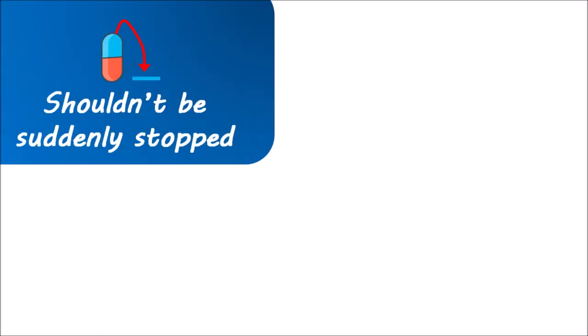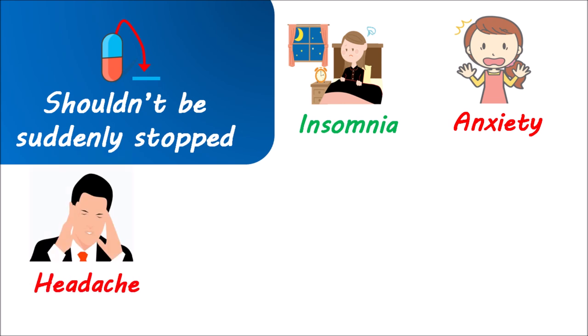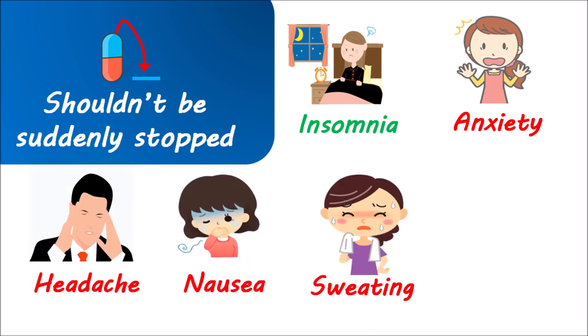Pregabalin should not be abruptly discontinued because it may exacerbate symptoms including increased insomnia, lack of sleep, increased anxiety, headache, nausea, excessive sweating, and diarrhea. All these conditions can be observed with the sudden withdrawal of pregabalin. That's why this drug should not be stopped suddenly, and the dose should be tapered slowly over one week in order to reduce any withdrawal effects.